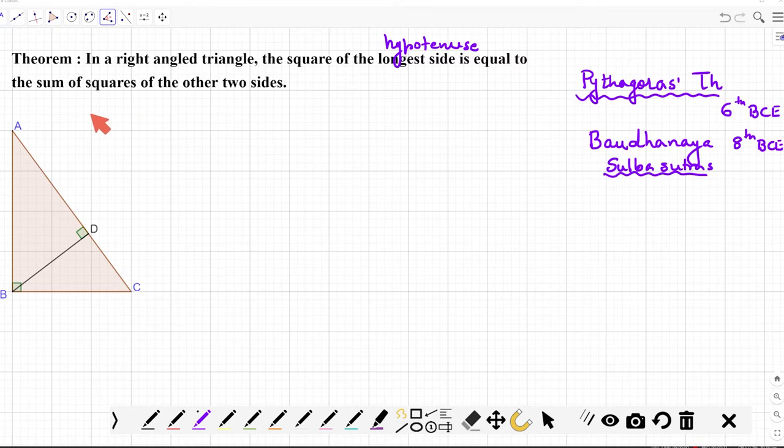So in this case, we can start with the formal proof, starting with what's given. It's given that in triangle ABC, we have angle B is equal to 90 degrees. Angle ABC is 90 degrees.